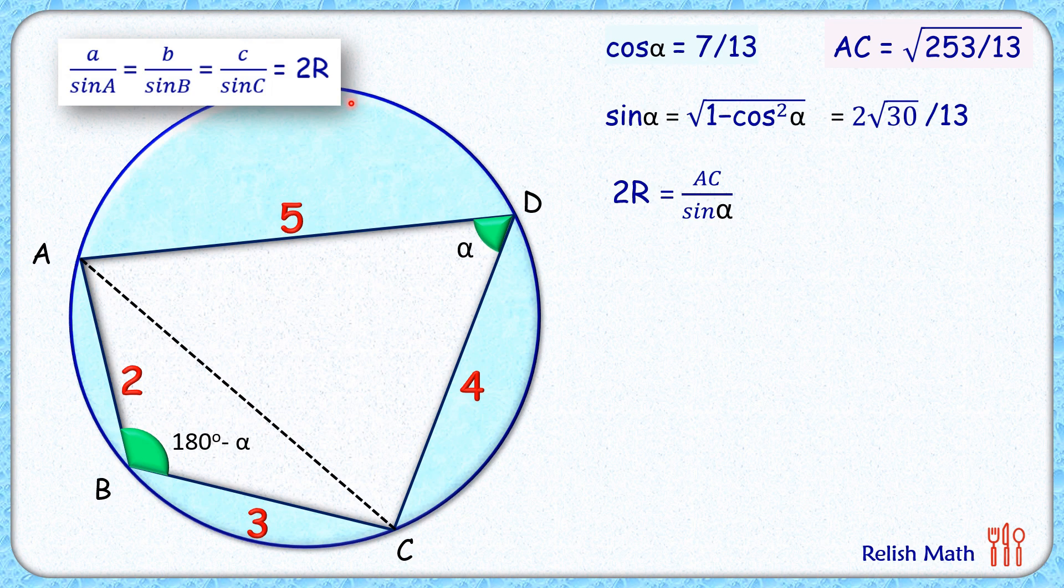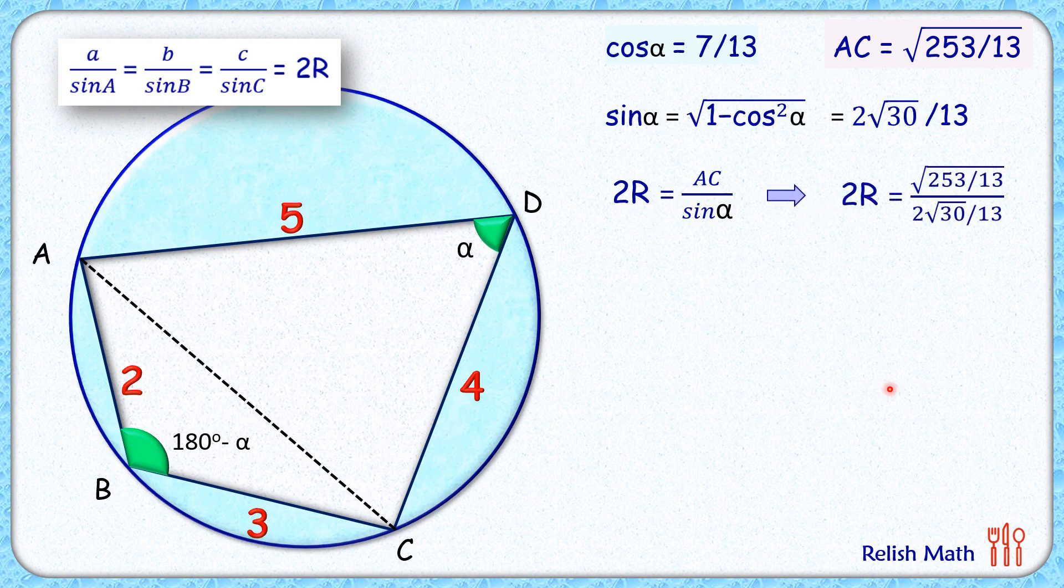Putting the values of AC as square root of 253 by 13 and sin alpha as this, we'll get the value of 2R in this form. Simplifying it, we'll get R as square root of 329 upon 4 root 30.